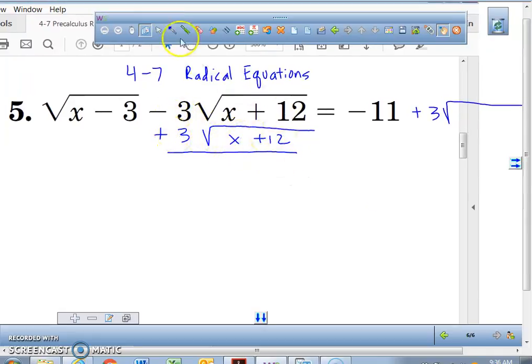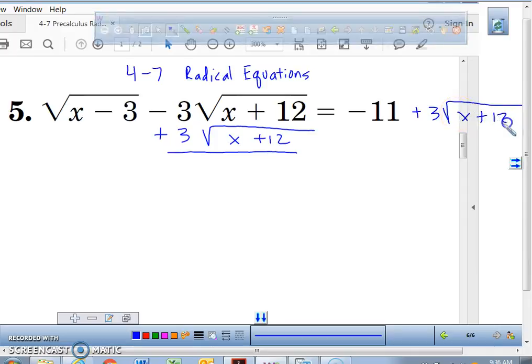I'm adding 3 radical x plus 12 to both sides because you need to get the radicals on opposite sides of the equal sign. So here's what we have.